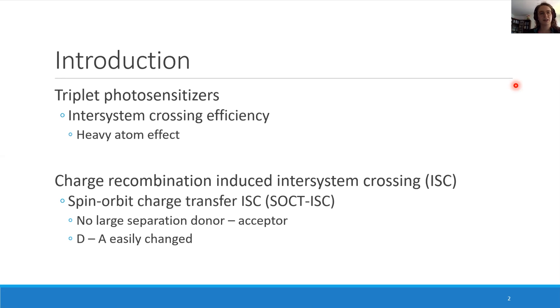This SOCT intersystem crossing is especially interesting for triplet photosensitizers because there is no need for large separation between the donor and acceptor. The donor and acceptor can easily be changed to connect with a visible light harvesting chromophore.